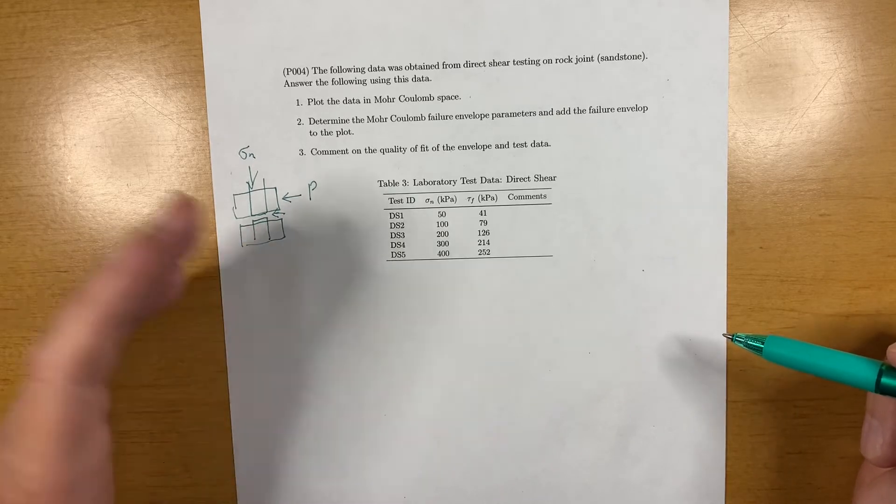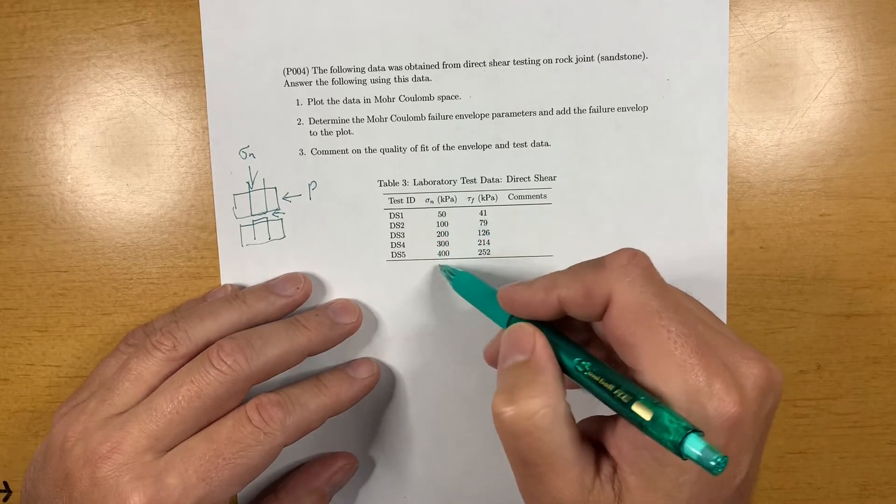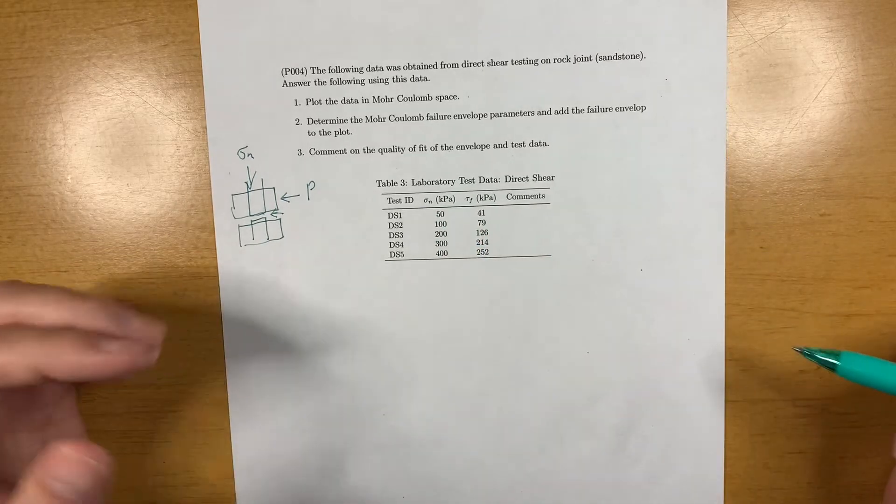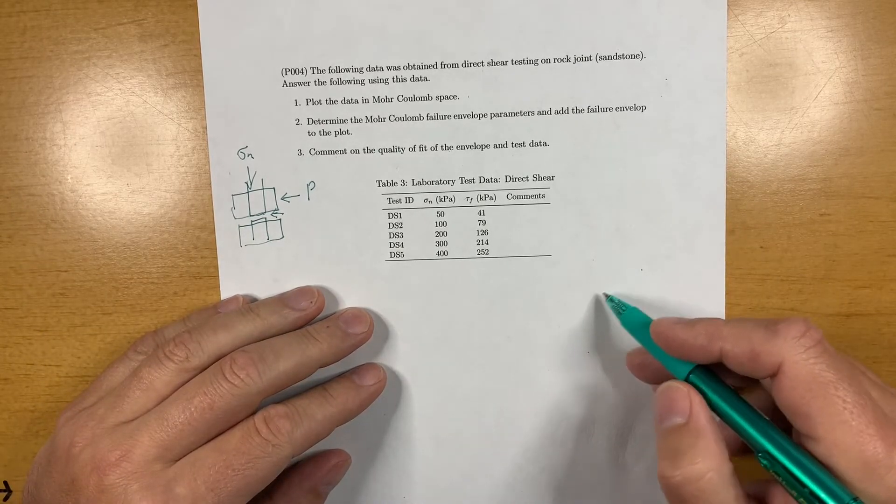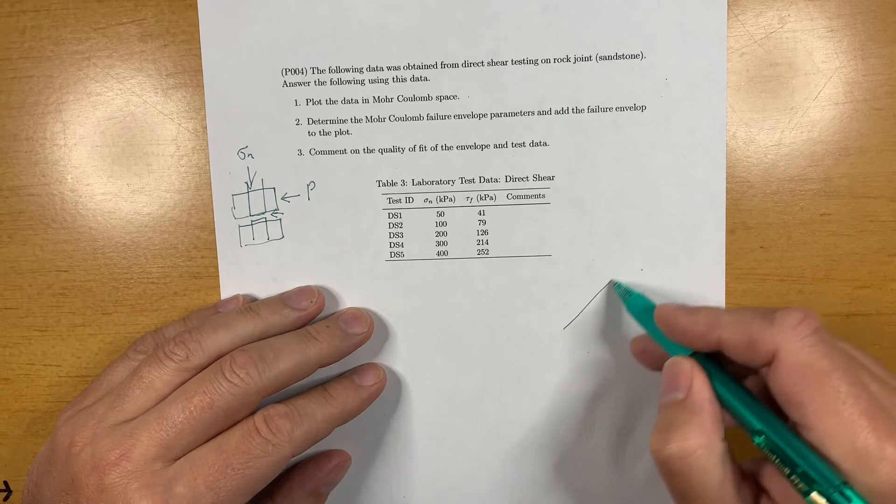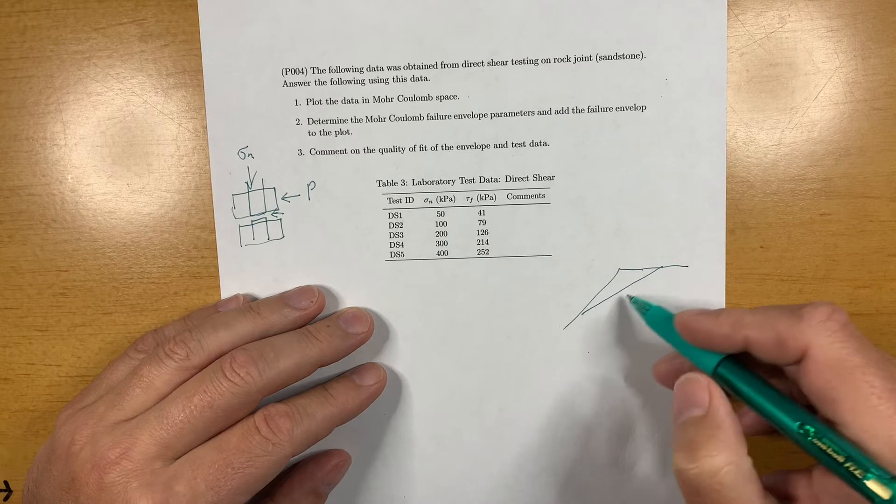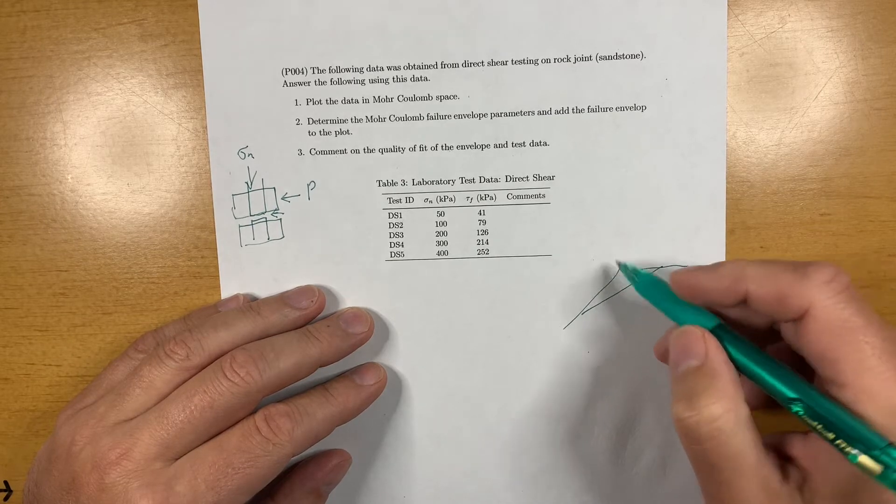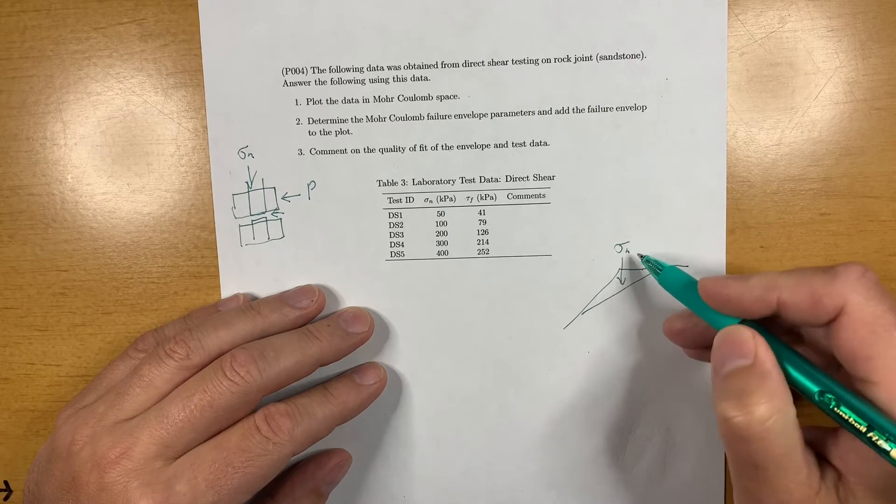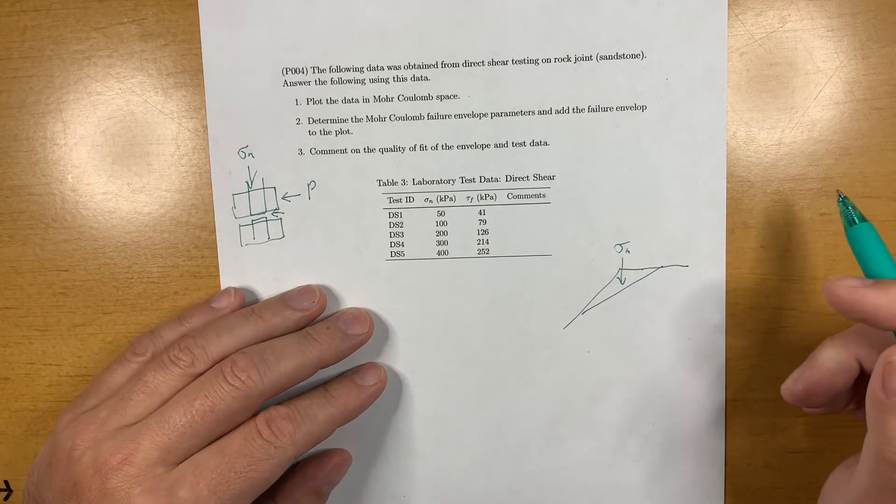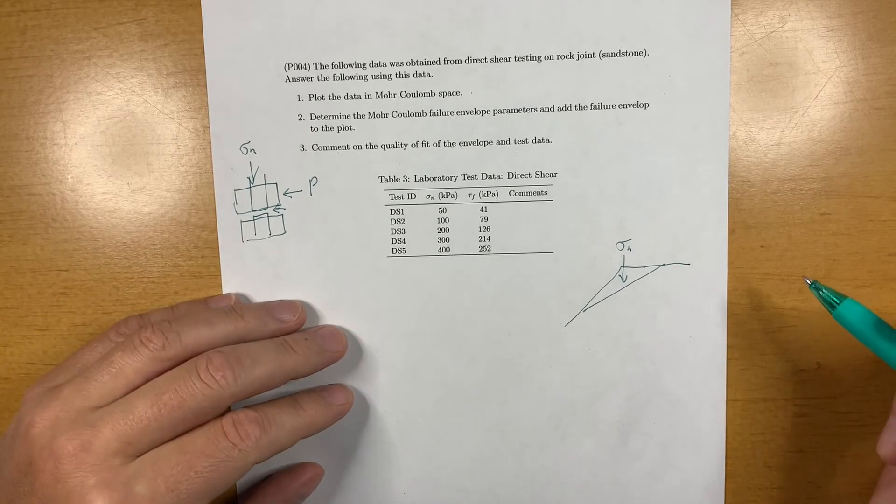One of the first questions is, in our test, did we select an appropriate range of normal stresses? Well, that depends on your project. For example, if you have a slope problem, say you have a sliding wedge and you basically want to do the tests so that sigma n is in the range of the sigma n that you expect to experience in the field.